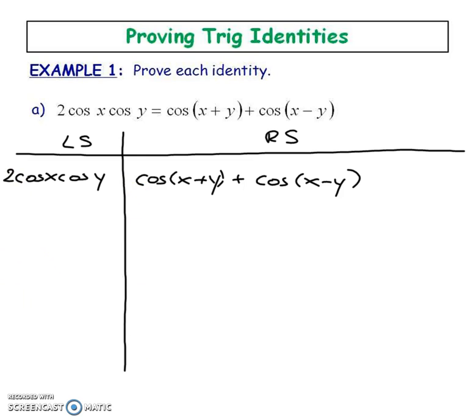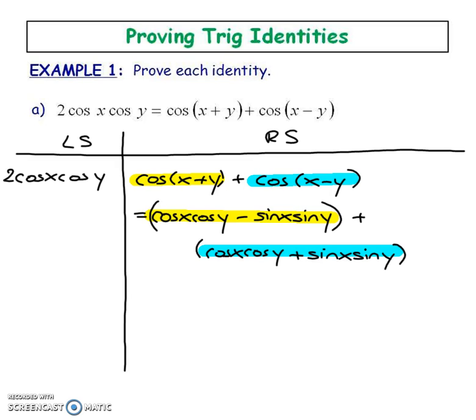So you know what just work on each side separately that means that equal signs will go along the sides as if you were just simplifying each side. Hopefully at the end your left side will equal your right side and if it doesn't it means you did something wrong. So I'm thinking you know what the left side looks pretty good. I'm going to start working on the right side because I'm noticing that these two look like compound angle formulas.